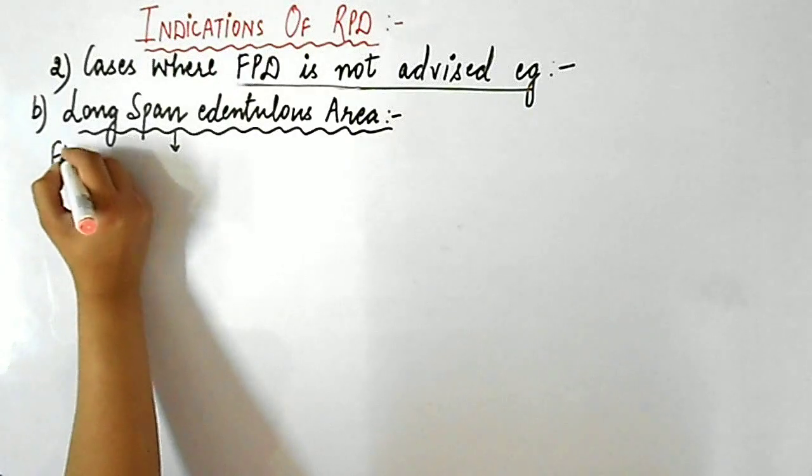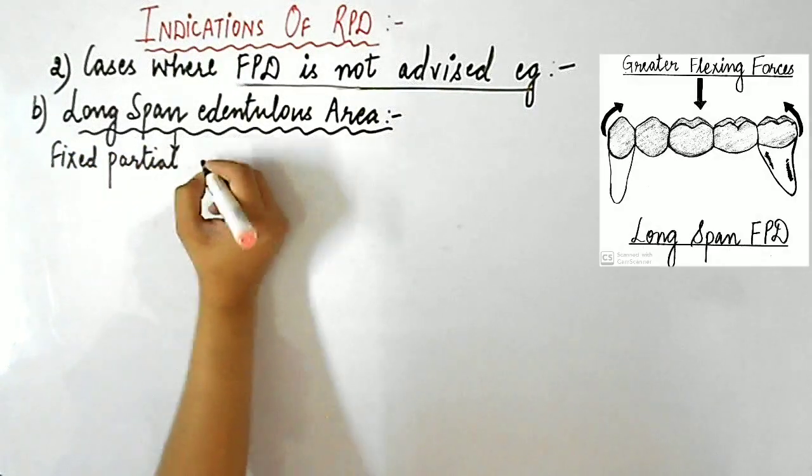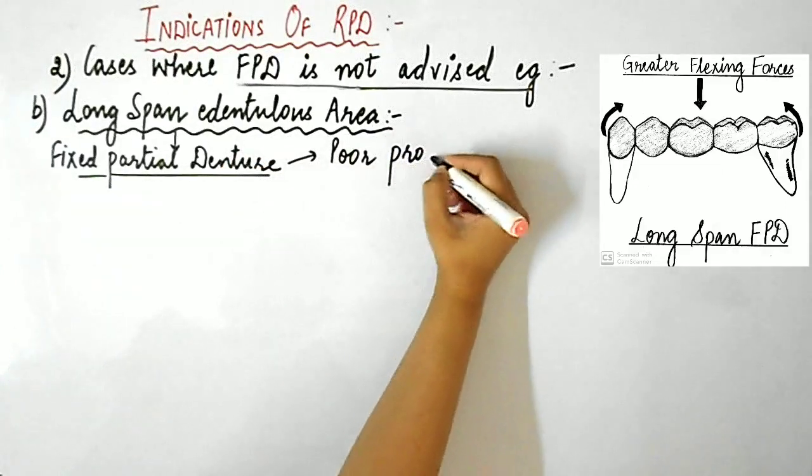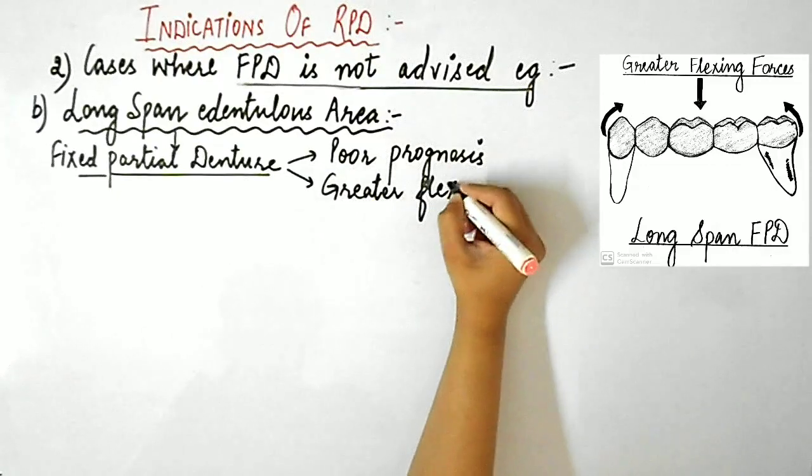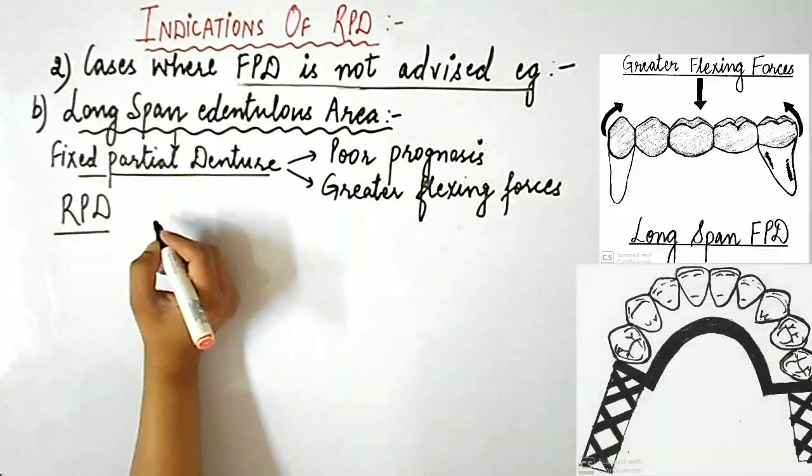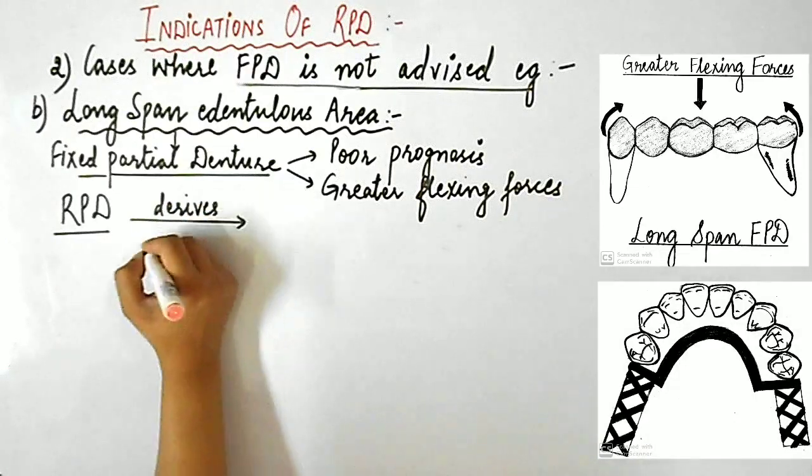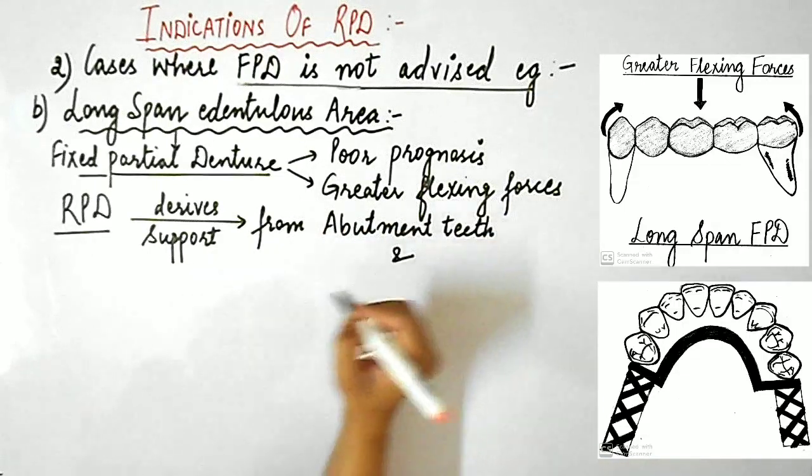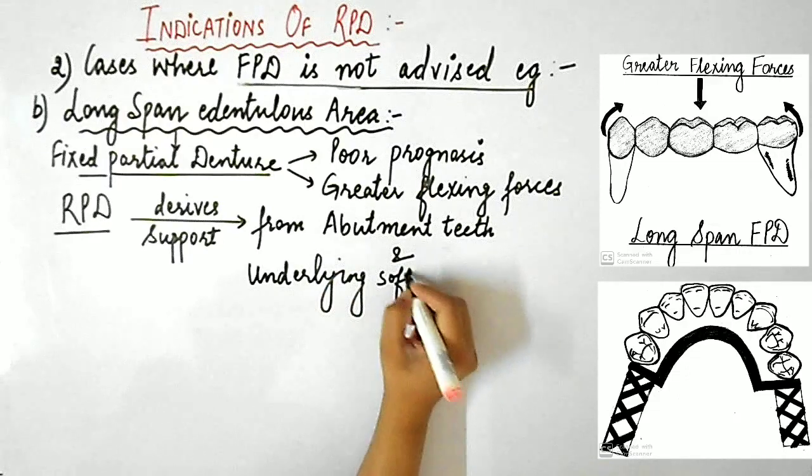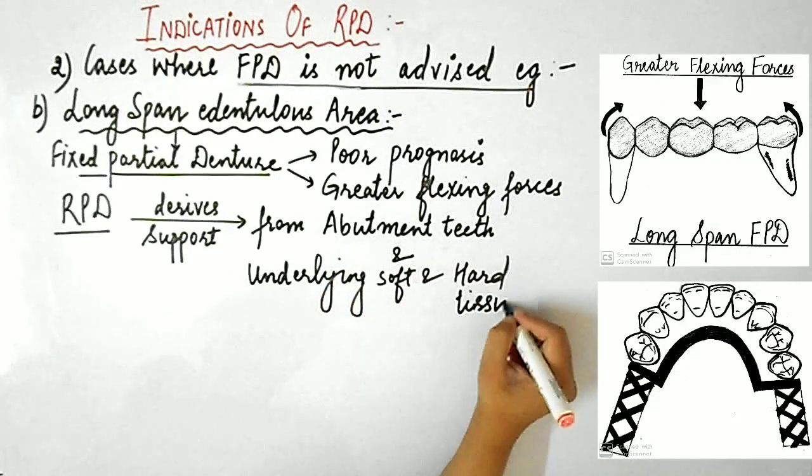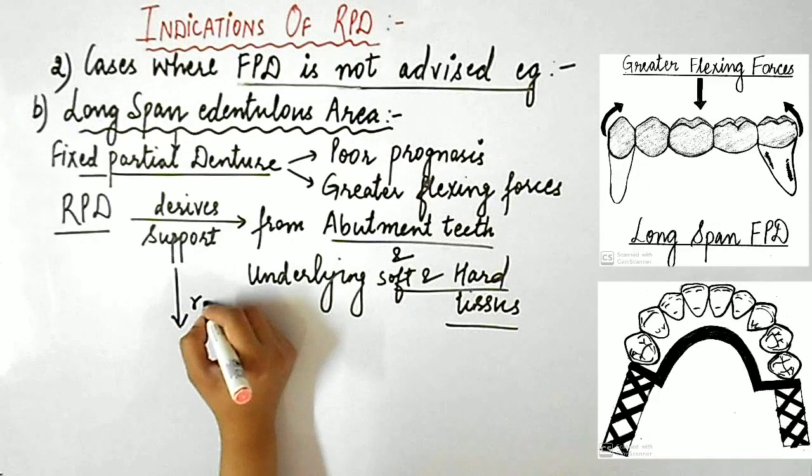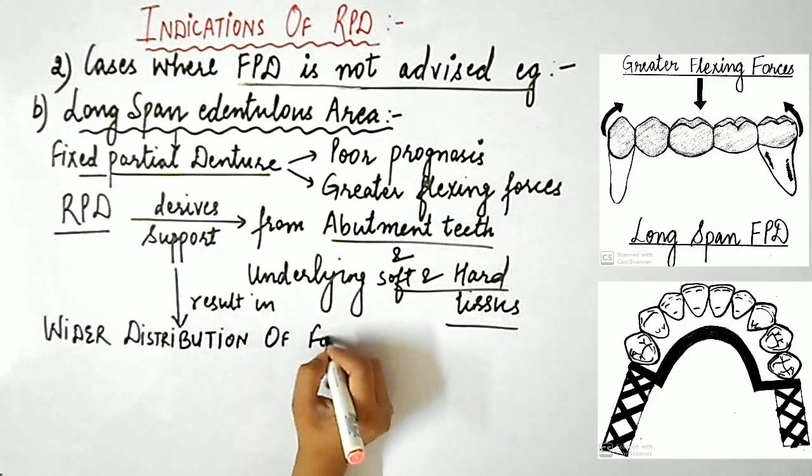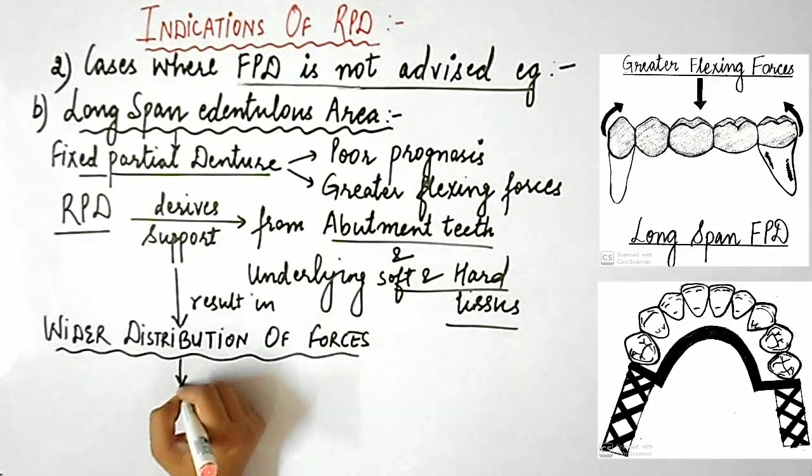Next clinical situation where FPD is not advised is long span edentulous areas. Generally, a fixed partial denture replacing more than three consecutive missing teeth does not have good prognosis due to the greater flexing forces, as you can see in the diagram. However, RPD is indicated for lengthy edentulous span because it derives support from both the abutment teeth as well as underlying soft and hard tissues, resulting in wider dissipation of forces, thus minimizing damage to the abutment teeth and soft tissues.